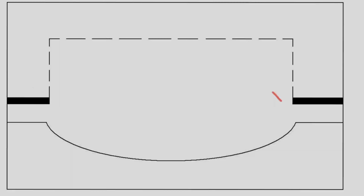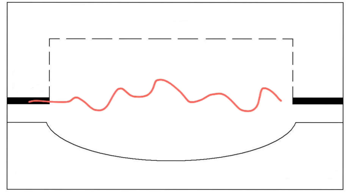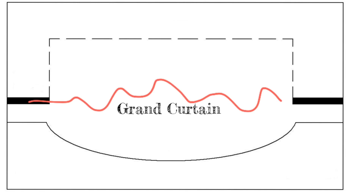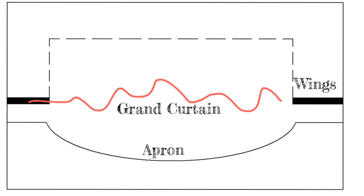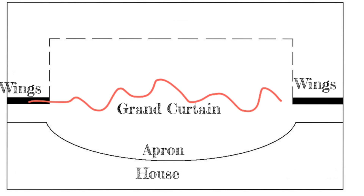These words are going to help you when it's time for your show, time to perform. You'll know all of the words you need to know to perform in that space. The curtain that goes across the front of the stage is called the grand curtain. The area in front of the grand curtain is called the apron. The backstage area on either side of the stage is called the wings, and the area in front where the audience sits is called the house.